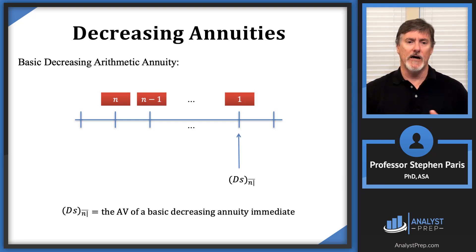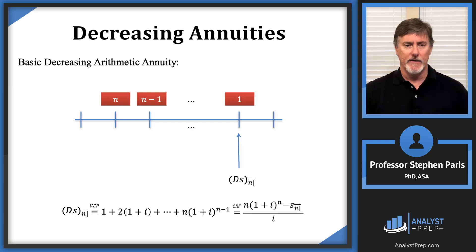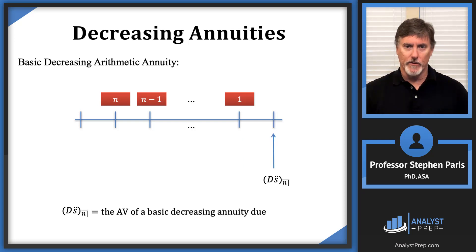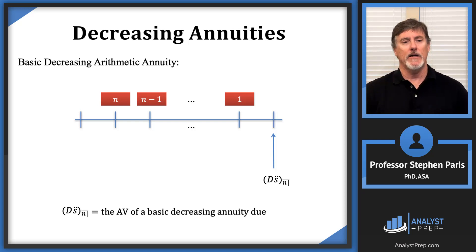Let's move the valuation date to the time of the last payment. The symbol we would use for the value there is cap DS angle N — it will be the accumulated value of this basic decreasing annuity immediate. The VEP and closed-form formulas are listed on the slide. Moving the valuation date one more period forward, the symbol would be cap DS double-dot angle N — the accumulated value of this basic decreasing annuity due.